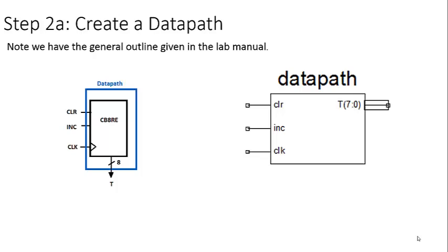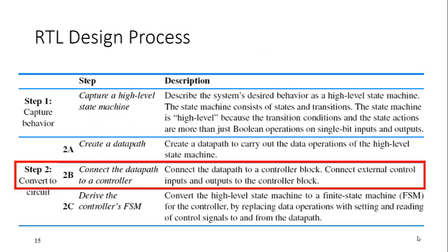Using a general model, we have our datapath defined as CB8RE, and we can make a model of that, as we see on the right-hand side, which was given to us in the lab manual.